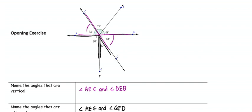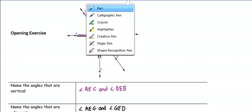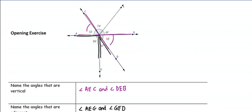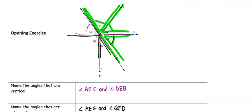Name the angles that are on a line. Let's highlight a line — I'll choose one of the two lines. Angles on a line are all the angles that add up along that line, so that would be these three angles: Angle CEF, Angle FEB, and Angle BED.